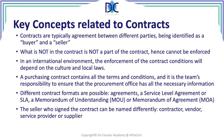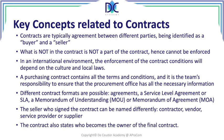The seller who signed the contract can be named differently — we can talk about a contractor, a vendor, a service provider, or a supplier. The contract also states who becomes the owner of the final deliverable when the work is completed. For example, a telephone line — you will never be the owner of the line; you will use it for a fee from, for example, the telecom company.